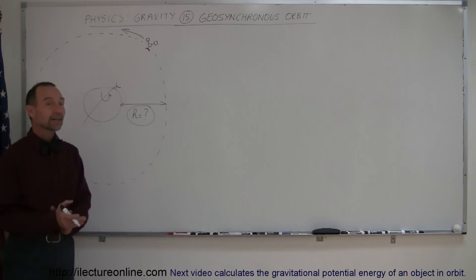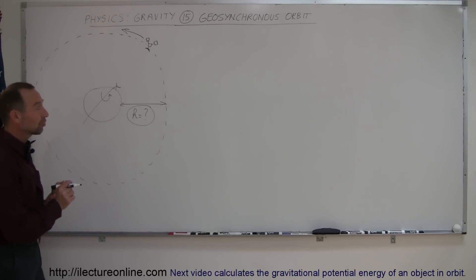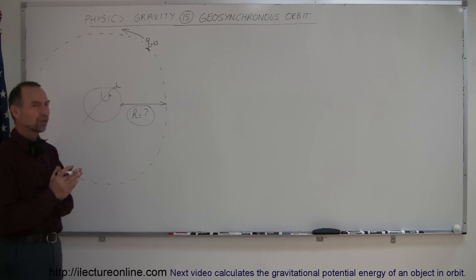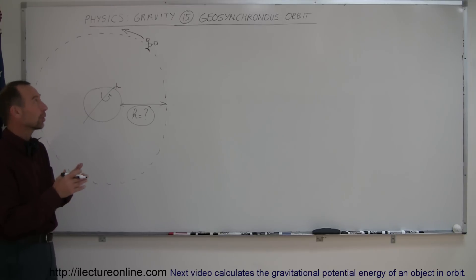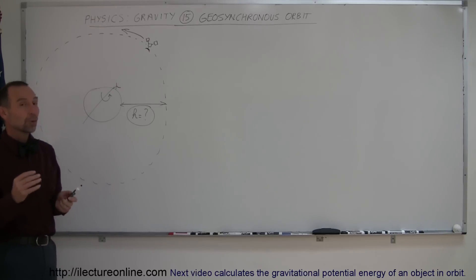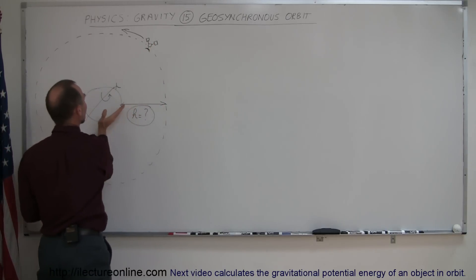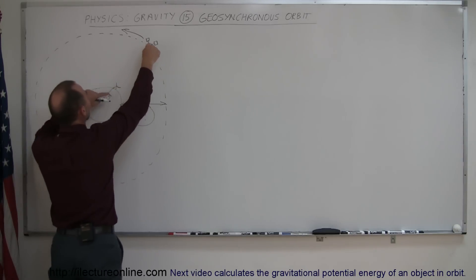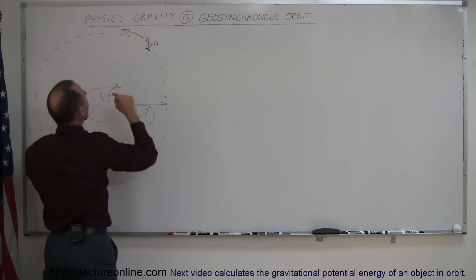Welcome to our lecture online. Our next topic in gravity is geosynchronous orbit, which is a very special orbit. Geosynchronous — geo means earth and synchronous means being synchronized. We want to put satellites in orbit above the earth so that as the earth turns around its axis, the satellite will always stay exactly above the same point on the earth.